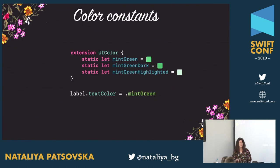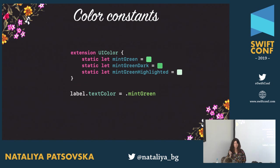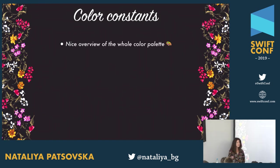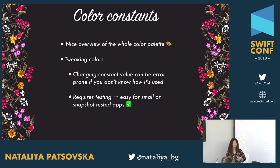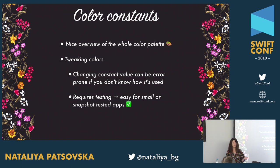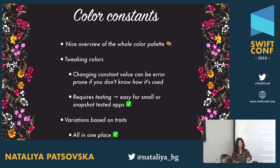Another common starting point is color constants. When you use the same color all over again and don't want to copy-paste, you extract it to a constant. This gives you a nice overview of your product palette in one place. With this approach, updating one color might still have unexpected results because you don't know all the places it's used. But for trait-based variations, since everything is in one place, it's easier to add it once and benefit from it everywhere.